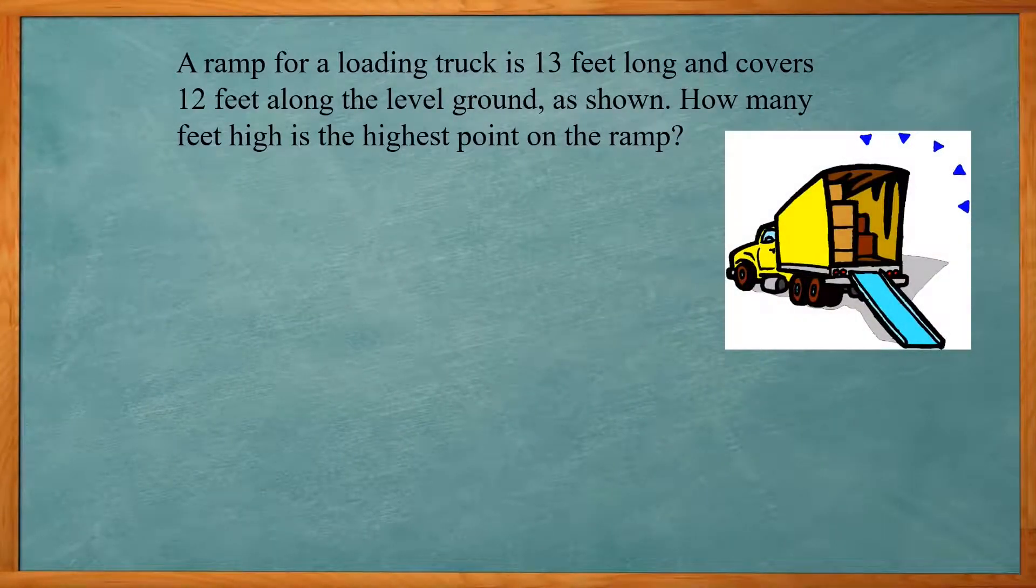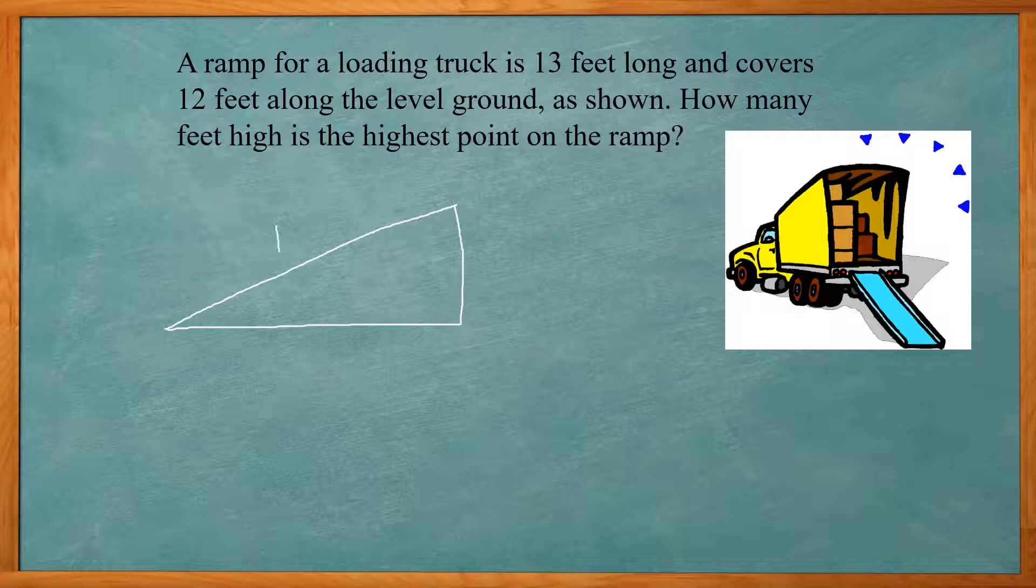Our example ACT/SAT problem reads as follows: A ramp for a loading truck is 13 feet long and covers 12 feet along the level ground as shown. How many feet high is the highest point on the ramp? We have a triangle where the ramp is 13 feet long and along the ground is 12.